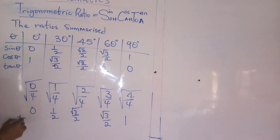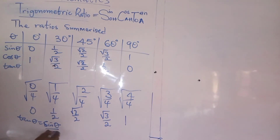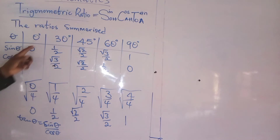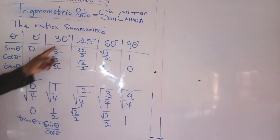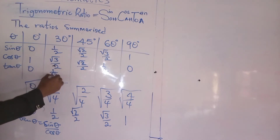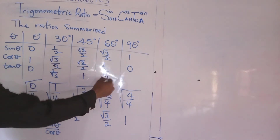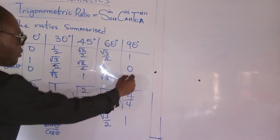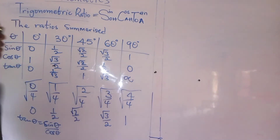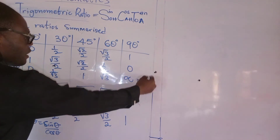Now, tangent θ equals sin θ divided by cos θ. So this divided by this will give me 0. This divided by this will give me 1 over square root of 3. This divided by this will give me square root of 3. It will give me not applicable, or not applicable.